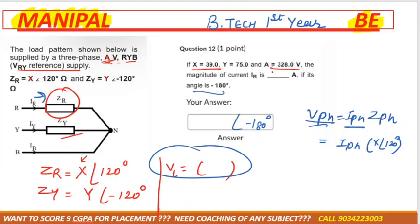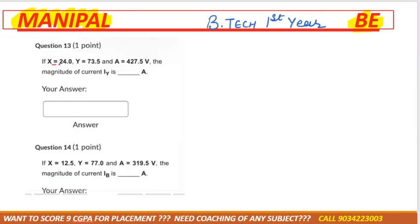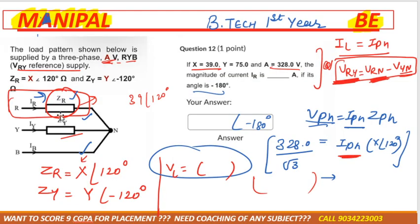The voltage given is 328-something divided by root 3. From VPH = IPH × ZPH, we can get IPH for ZR = X ∠120°. In the next part, they ask for IY using the same pattern — voltage, current, and angle are given, so the magnitude of IY can be found using the same method.